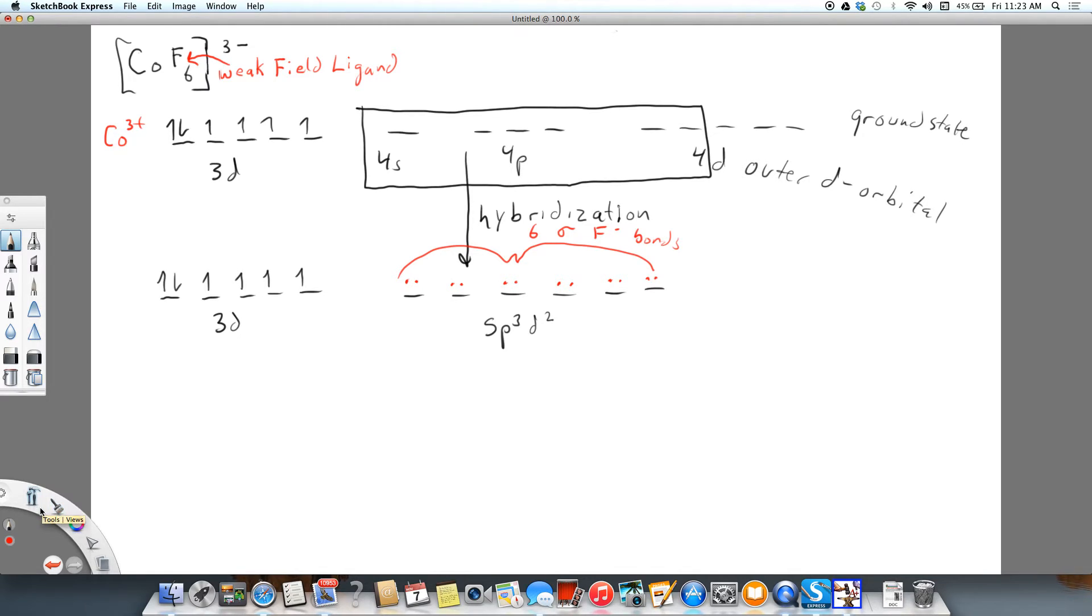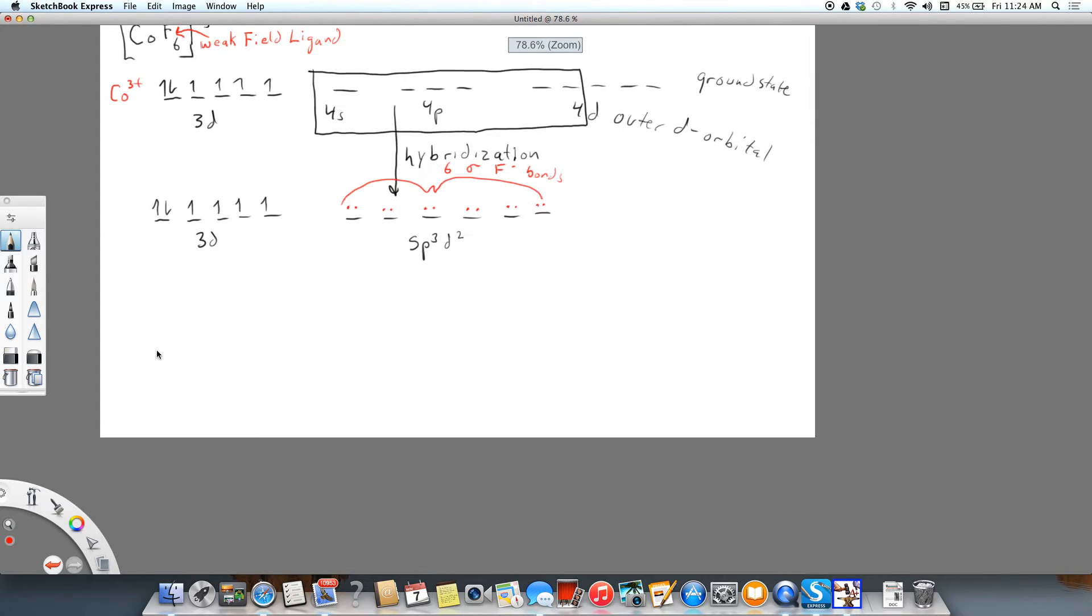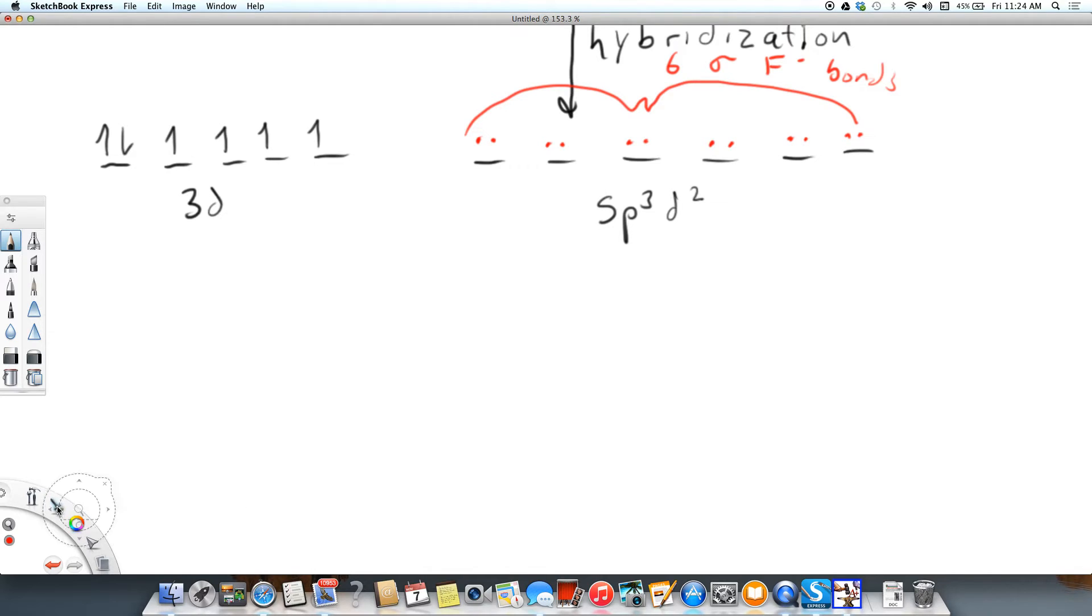Now I would like to look at this same ion from the crystal field theory. As you know, what happens is there is splitting. Let's take a look at cobalt-3 from that perspective. With splitting, 3 of the d orbitals—the 3d orbitals—we're talking about the interaction of these electrons from the ligand with these electrons from the d of cobalt.